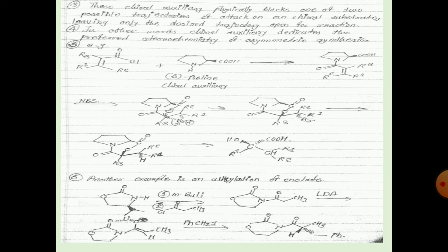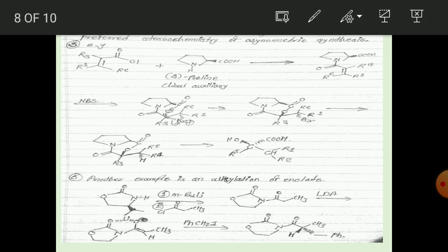For example, in the reaction of an alpha-beta unsaturated acyl chloride with S-proline: the nitrogen lone pair attacks, the Cl group leaves, and the adduct is formed. Then NBS, which is a bromination agent, brominates the double bond present in the adduct.